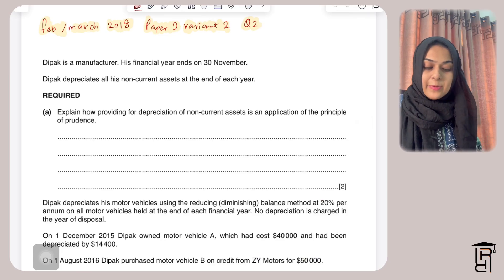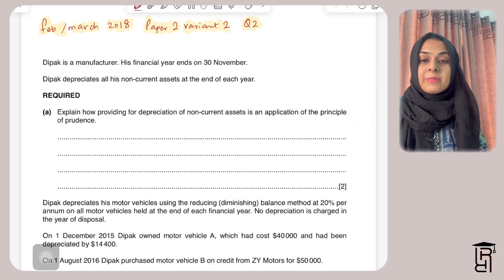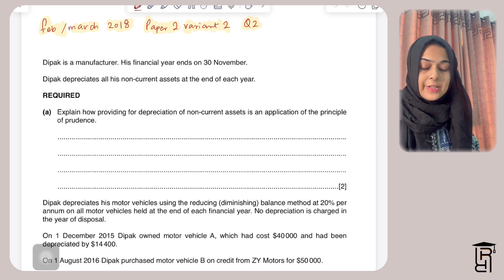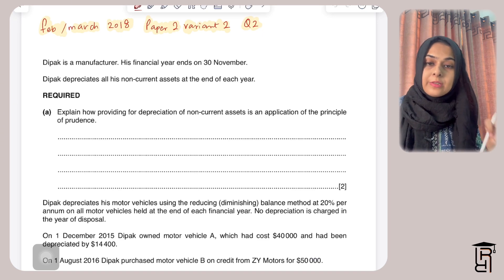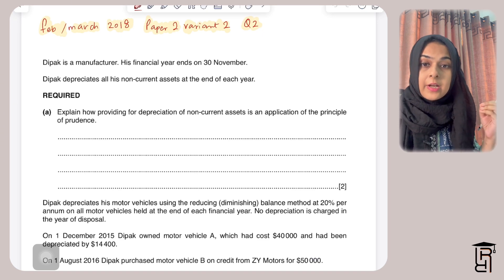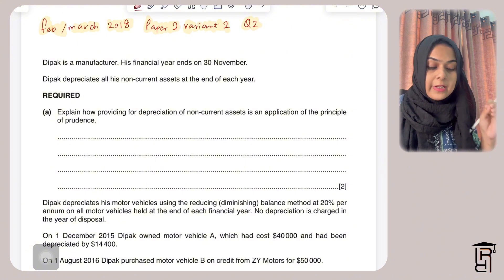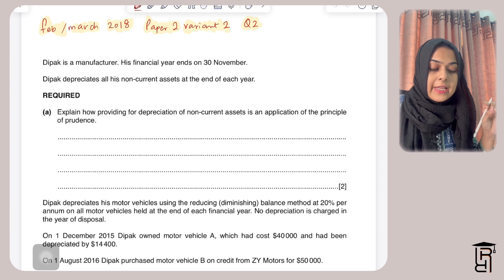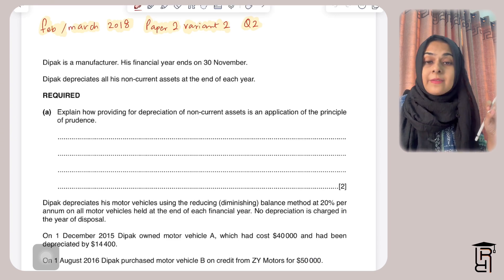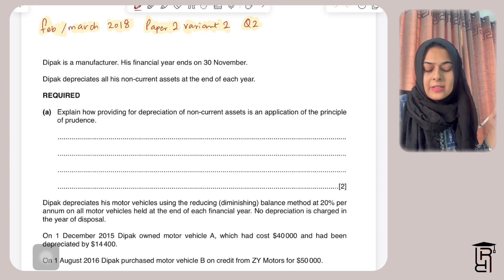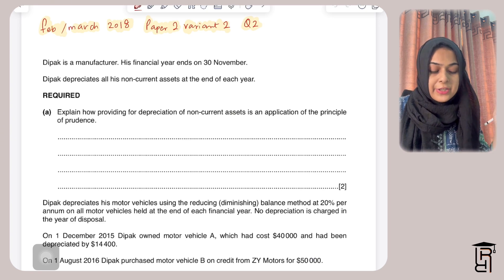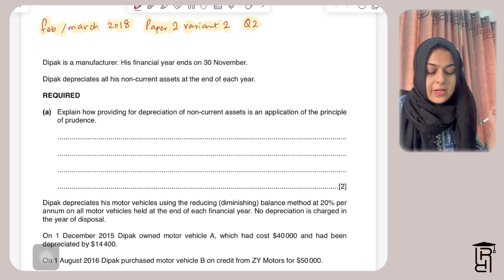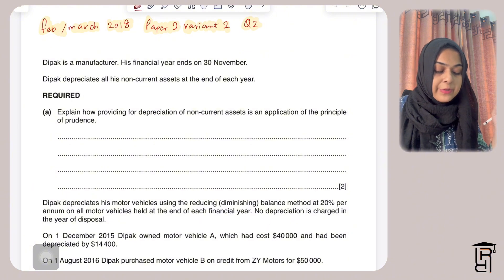Assalamu alaikum everybody. Today's question is from depreciation and disposals of non-current assets. In this question you'll learn the journal entries for disposal. The question says Deepak is a manufacturer whose financial year ends on 30th November and starts on 1st December. Deepak depreciates all his non-current assets at the end of each year.